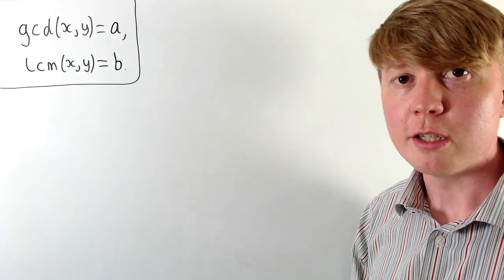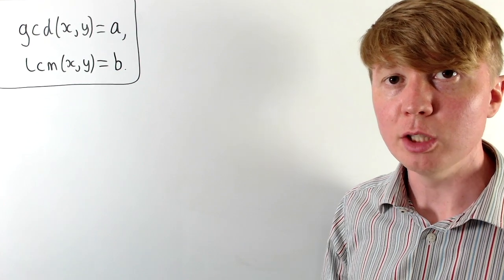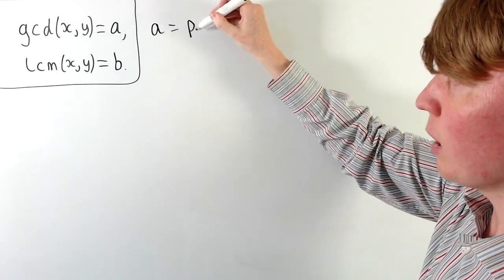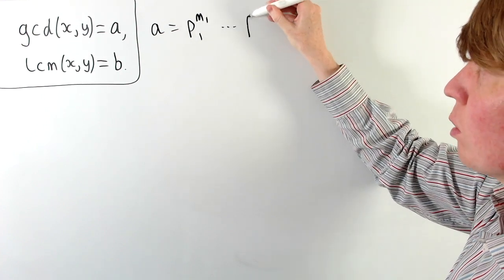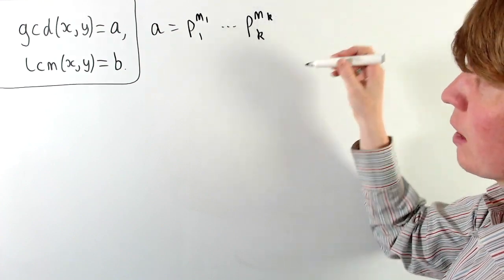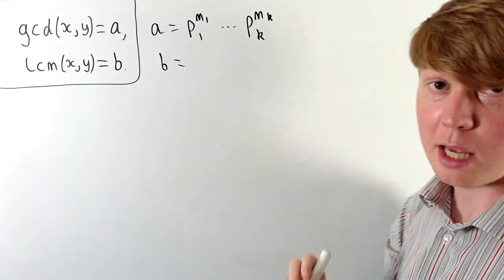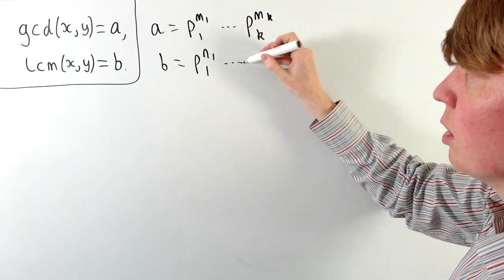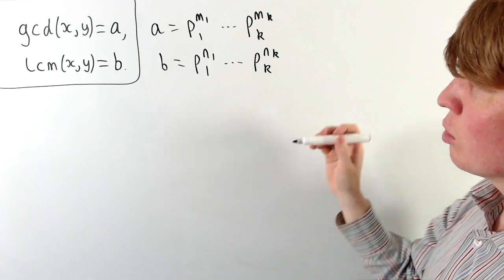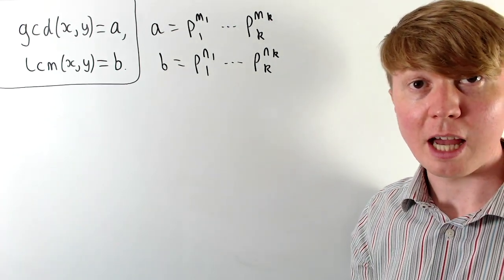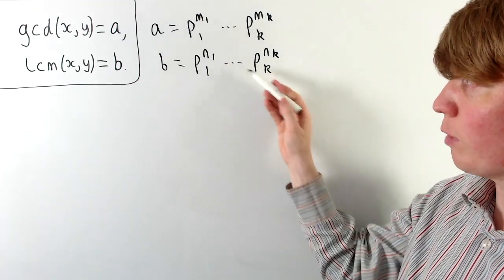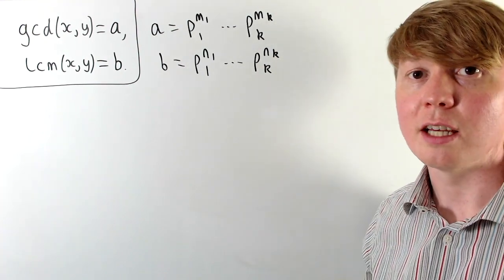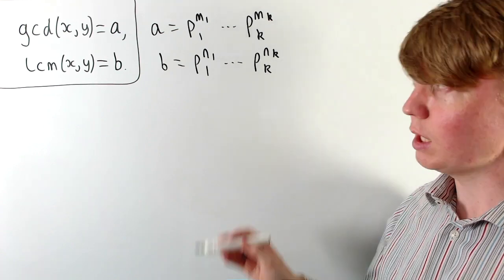For the general problem, where the GCD is some integer a and the LCM is some integer b, we express a and b in terms of their prime factorisations. We write a as p1 to the power m1, up to pk to the power mk. For b, we use the same set of primes: p1 to the power n1, up to pk to the power nk. If a and b don't share all prime factors, we set the missing powers to zero, giving a convenient unified form.